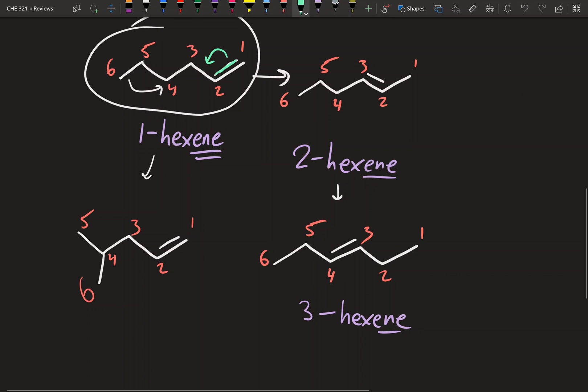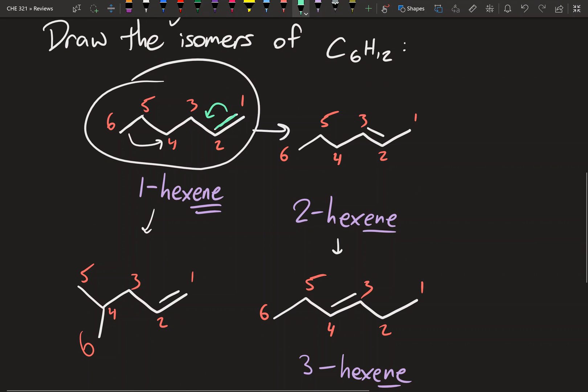And let's just make sure that everything we've done so far has the correct formula of C6H12. So this one right here has 6 carbons. Hydrogens are 1, 2, 3, 4, 5, 6, 7, 8, 9, 10, 11, 12. That checks out.